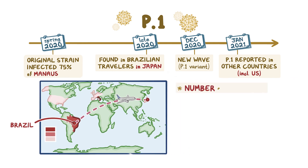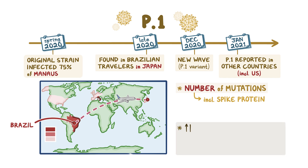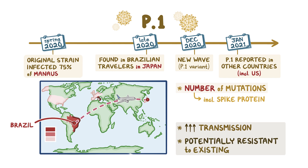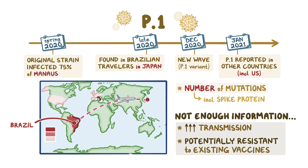P1 has a number of mutations, including some in the spike protein region. Just like B117, there are concerns this strain may be more transmissible and may also be potentially resistant to existing COVID-19 vaccines. That said, just like the other variant strains, there is not enough information to confirm if these concerns are true.